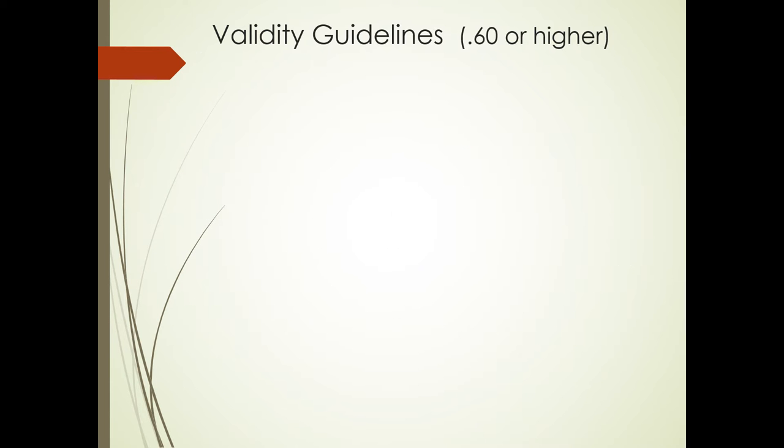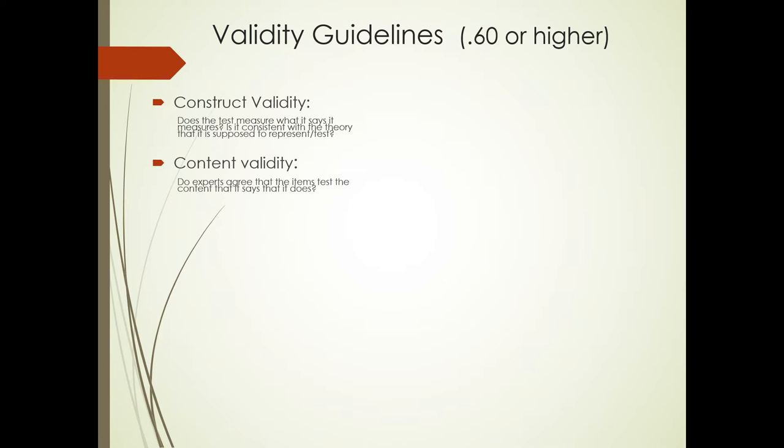Let's take a look at validity guidelines. Now I want you to put in your mind a validity coefficient of 0.60 or higher. Reliability says 0.70 or higher, but for validity it's 0.60 or higher. Construct validity won't have an actual score. It will be by argument. Does this test measure what it says it measures? Is it consistent with the theory that it's supposed to represent? And so the author should make the case for the construct being about reading comprehension if it says it's testing reading comprehension. Content validity is usually established by asking experts to agree to take a look at the items and to see whether they test the content that it says it does.